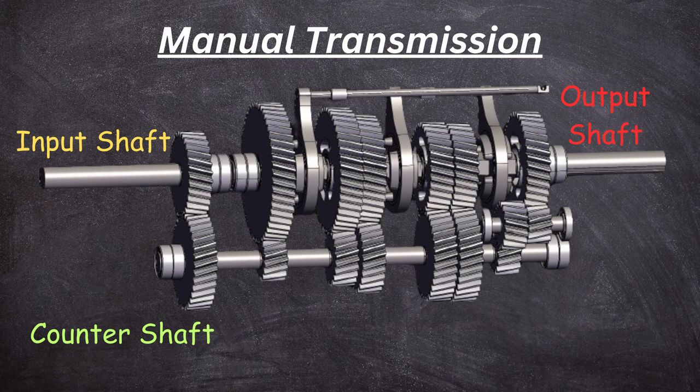The counter shaft has all these other gears corresponding to the gears on the output shaft. However, the gears on the output shaft are not exactly engaged with the output shaft — they move freely and independently of it, not transferring power to it. These gears are always in mesh with each other, so if one gear rotates, the entire system rotates, but they are not anchored to the output shaft.